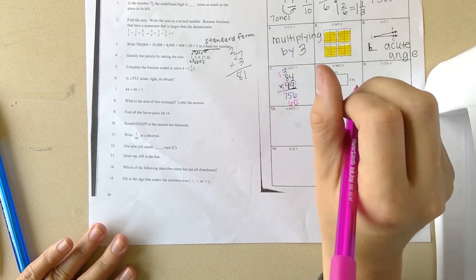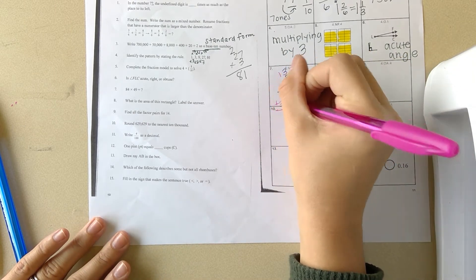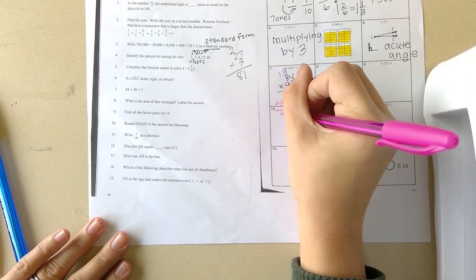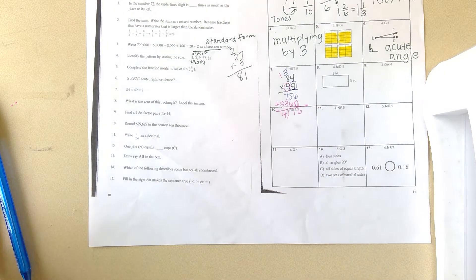Next, we're going to multiply with our 4. Four times 4 is 16. Eight times 4 is 32 plus the 1 is 33. We will add: 6, 11, 11 again, and then 4. So 84 times 49 is 4,116.